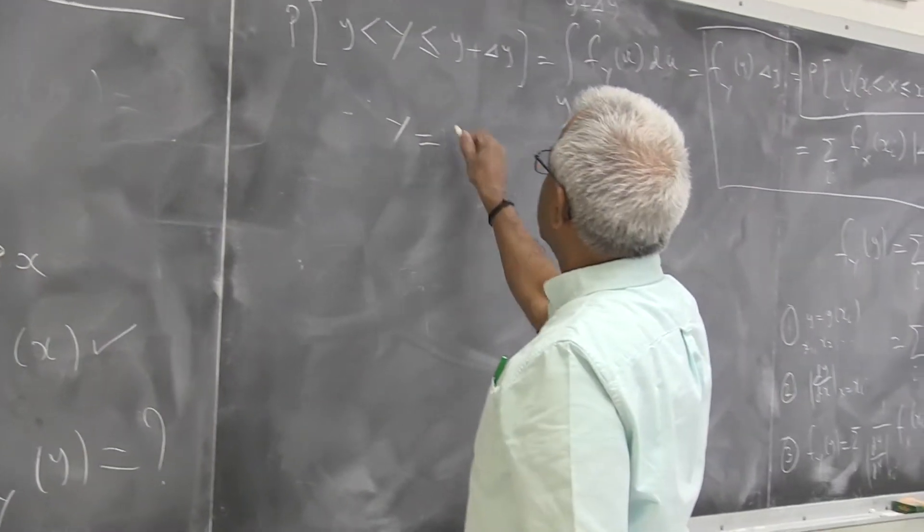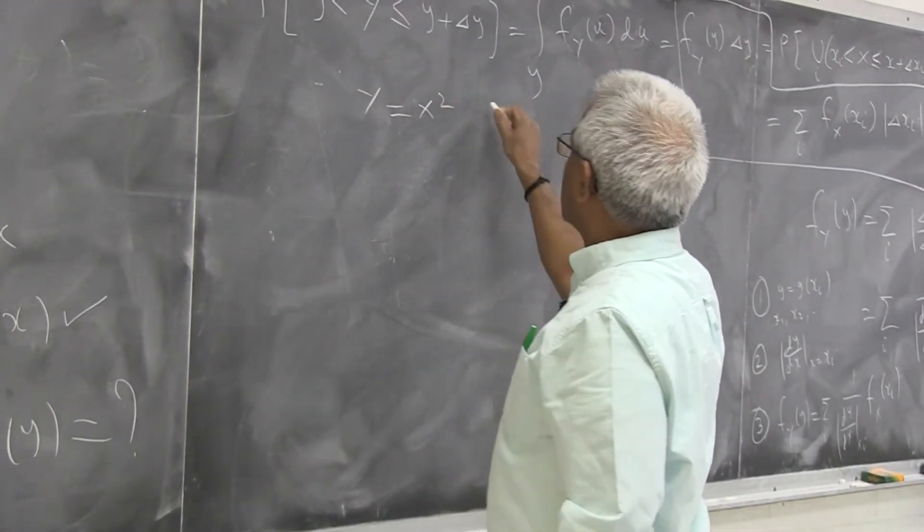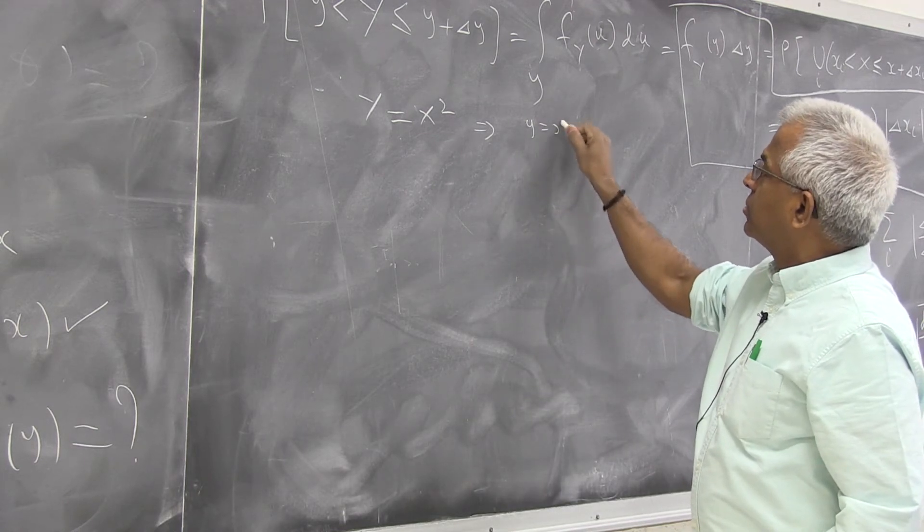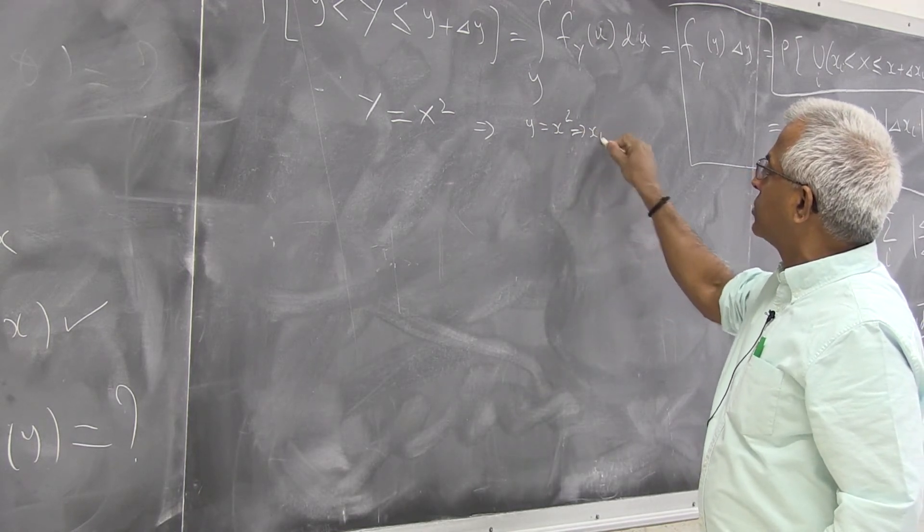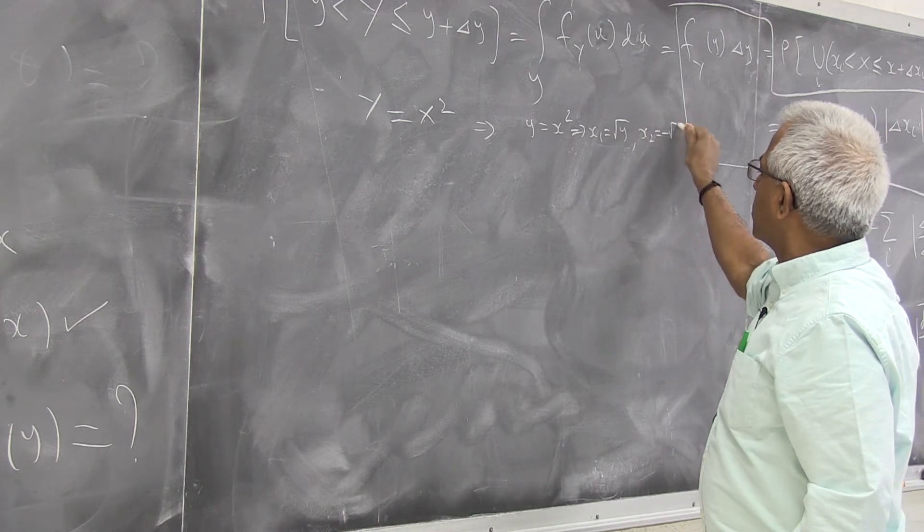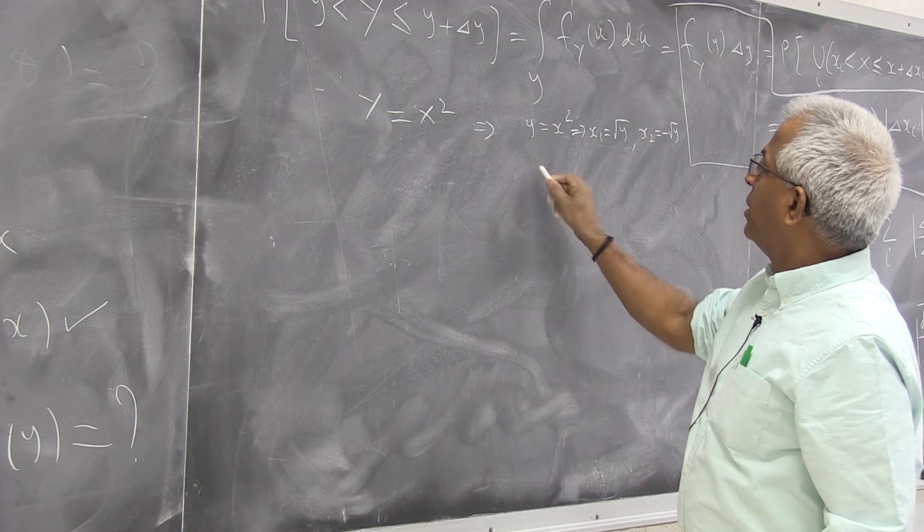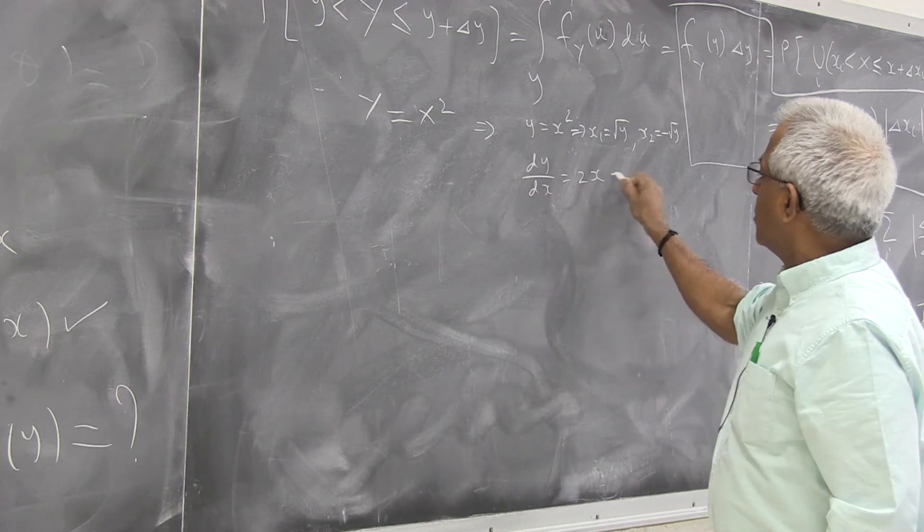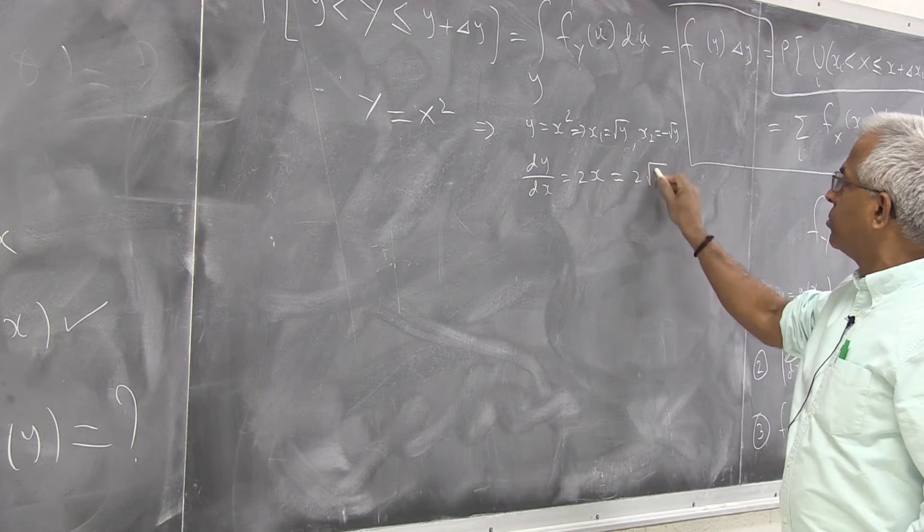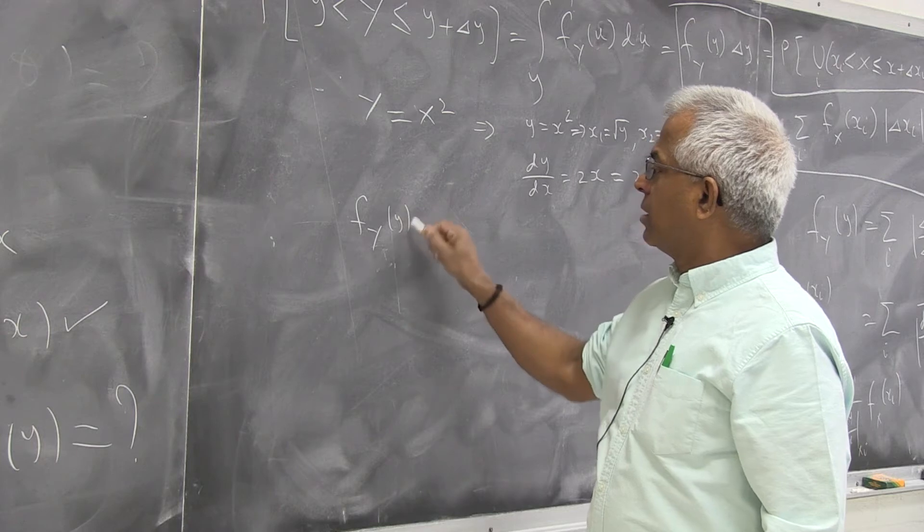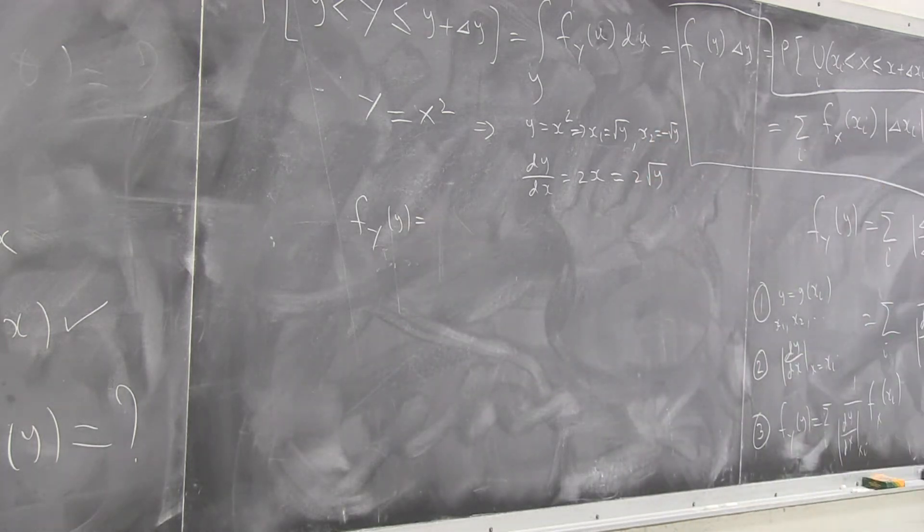Let's say y equal to x squared. So here, if you fix y, there are two roots to this equation. x1 is square root of y, x2 is minus square root of y, and dy by dx is 2x, which evaluate the roots. At these roots, it is 2 square root of y. So that's step number 2.